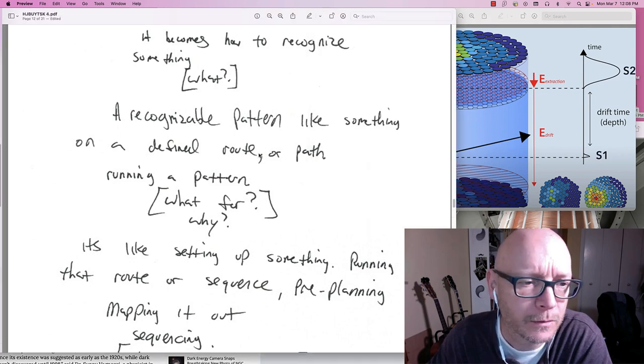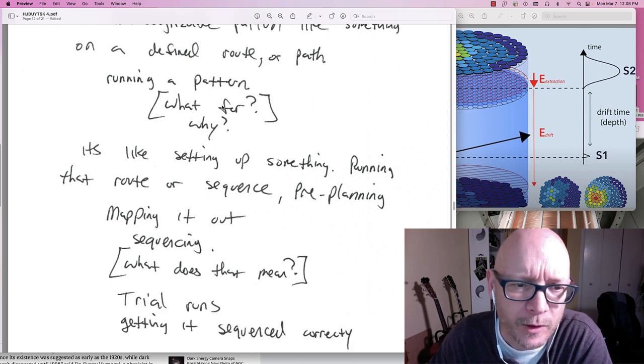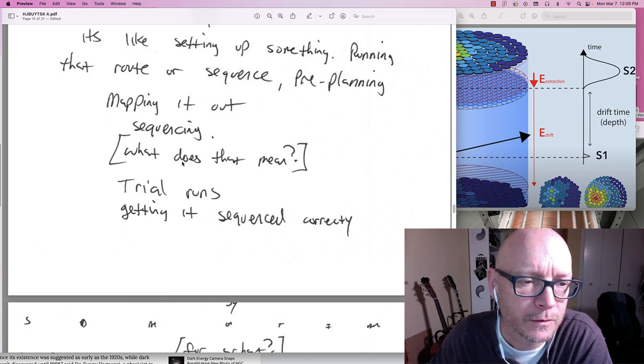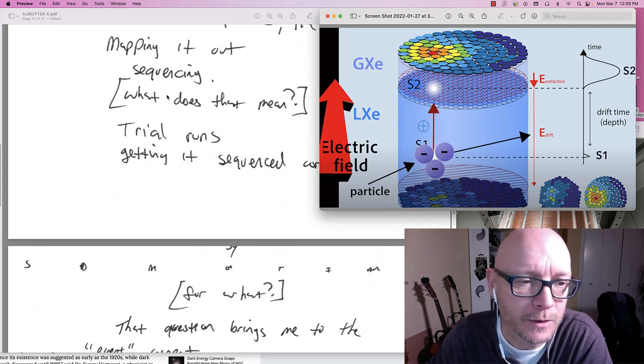What for though. I wonder. And why. It is like setting up something. Running that route. That route. Or sequence. Preplanning. Mapping it out. Sequencing. What does that even mean. I wonder. Trial runs. Getting it. Sequenced. Correctly. Which they absolutely. Have to do here.